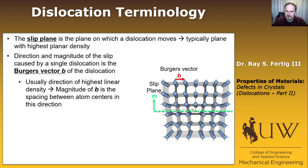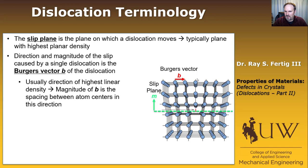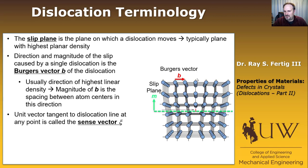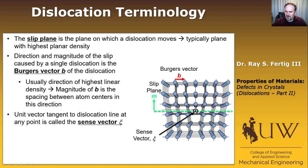In general, the Burgers vector is going to be in the direction of the highest linear density, and the slip plane typically is the plane with the highest planar density. The final characteristic used to describe a dislocation is the unit vector tangent to the dislocation line at any point, called the sense vector, defined as C. The sense vector here would be straight out of the screen — the dislocation runs in and out of the screen, so the sense vector just runs in and out.